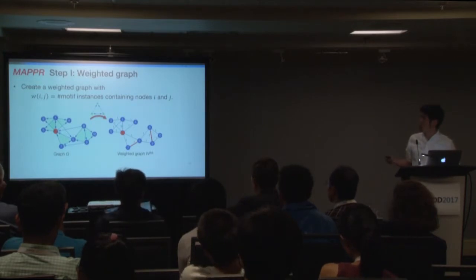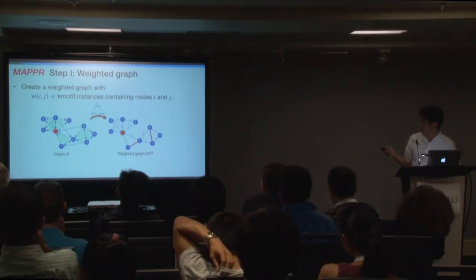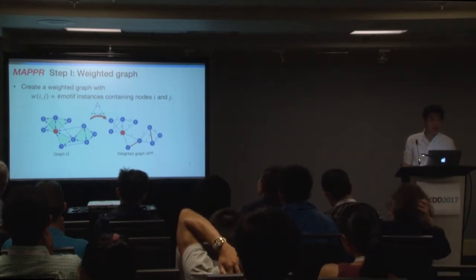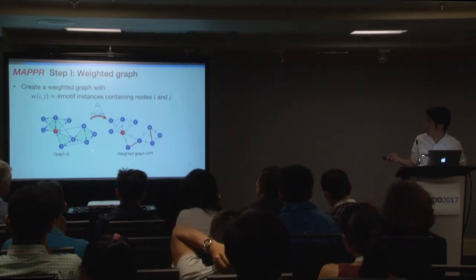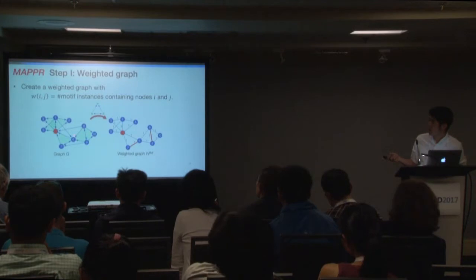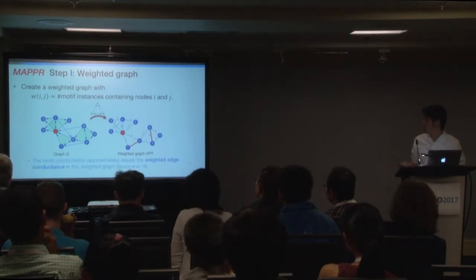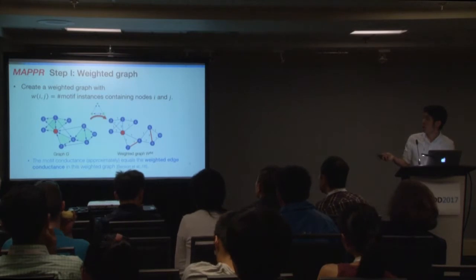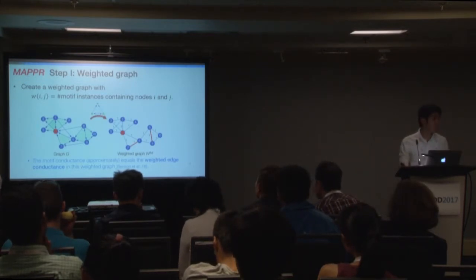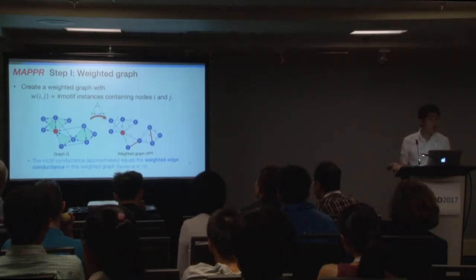Now I'll talk about the detailed three steps of our algorithm. The first step is to build a weighted graph. The weight on every edge equals the number of motif instances containing that edge or those two nodes. For example, the edge between nodes 6 and 7 is weighted as 1 because there is one motif instance there. However, the edge from 8 to 9 is weighted as 2 because there are two motif instances. It has been shown that the motif conductance of any cluster in this weighted graph is approximately equal to the motif conductance in the original network.